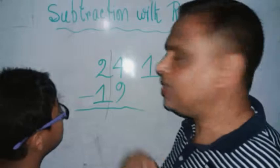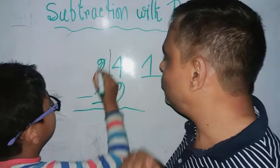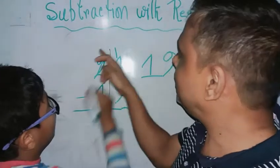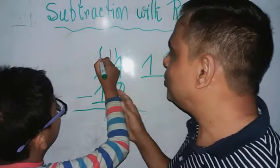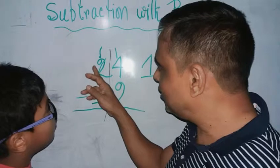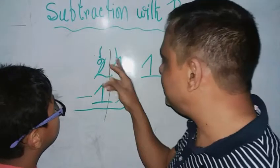Well done! So here, what number will be left over here? Why? Because you borrow one ten from two tens, so one ten remains.